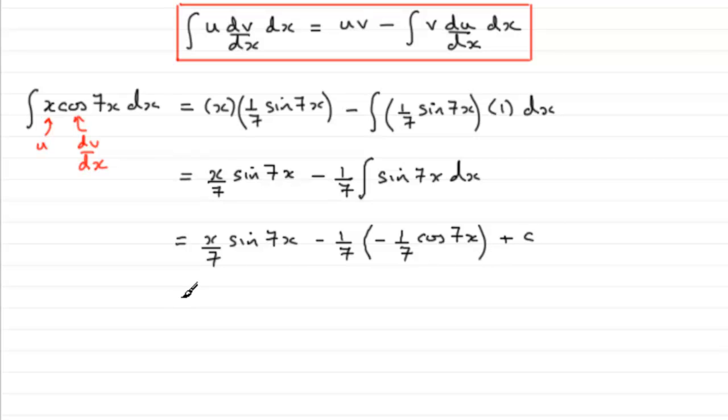Just tidy this up now and we've got the first term x over 7 sine 7x. And for this last term here, we've got minus 1/7 times minus 1/7 which is going to be plus 1 over 49. 1 over 49 then multiplied by cos 7x plus c. And that's essentially it.